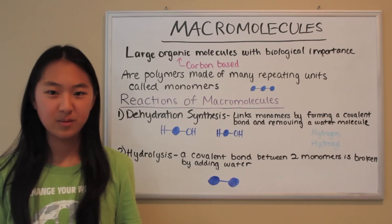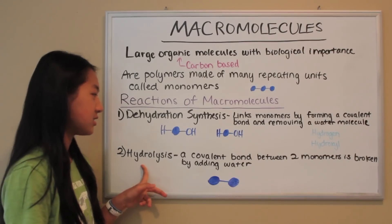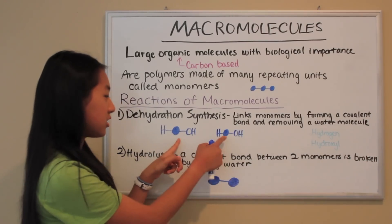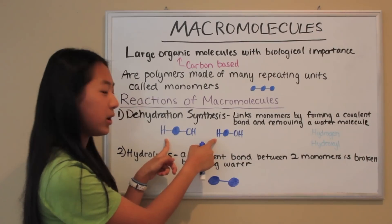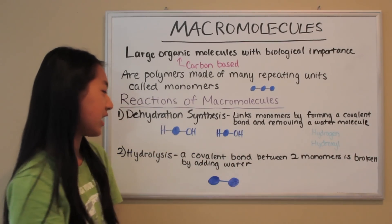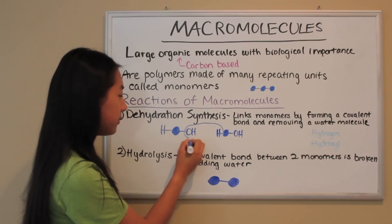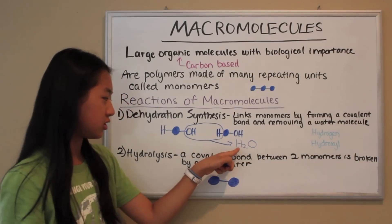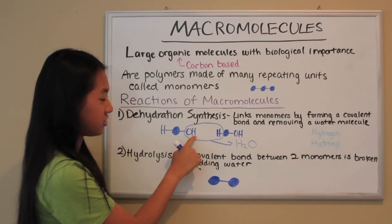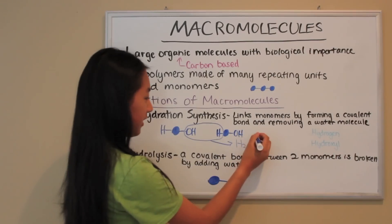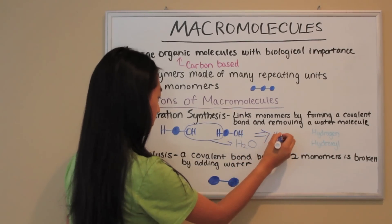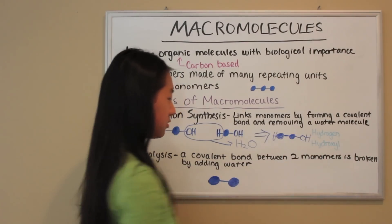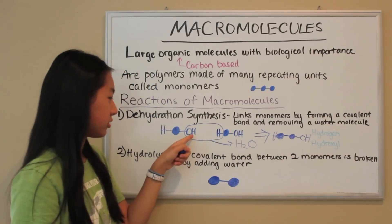There are two reactions involving macromolecules: dehydration synthesis and hydrolysis. Dehydration synthesis links monomers by forming a covalent bond and removing a water molecule. Here are two monomers bonded with a hydrogen at one end and a hydroxyl group at the other end. In this reaction, the hydroxyl group and the hydrogen come together and form a water molecule — two hydrogens and one oxygen. Then the water leaves and a new chain is formed, with a new covalent bond where the hydroxyl group and hydrogen once were.